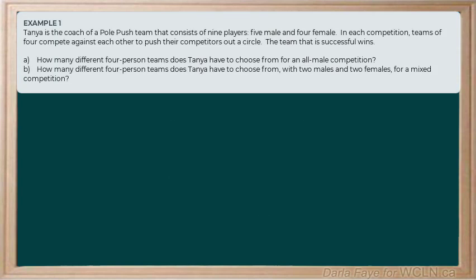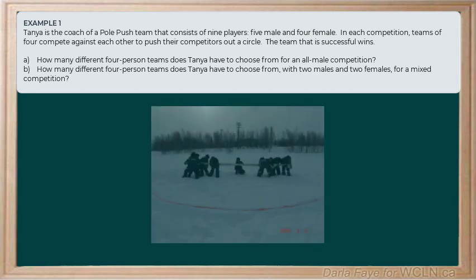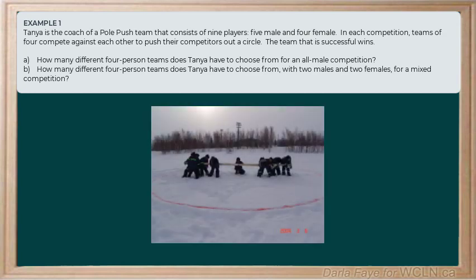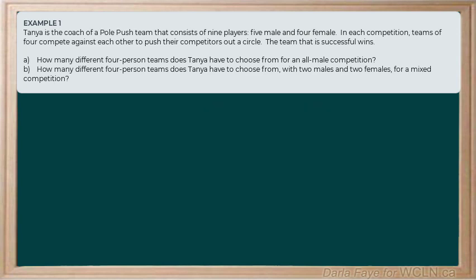Let's jump into our first example. Tanya is the coach of a pole push team that consists of nine players — five are male and four are female. If you've never heard of this pole push game, I encourage you to look it up. It's a competition where teams of four compete against each other and try to push their competitors out of a circle. The team that's successful wins.